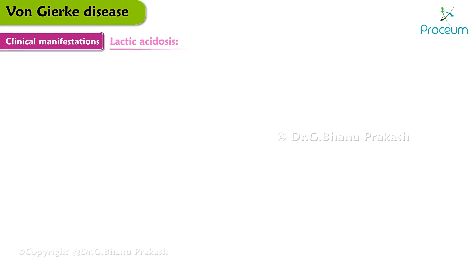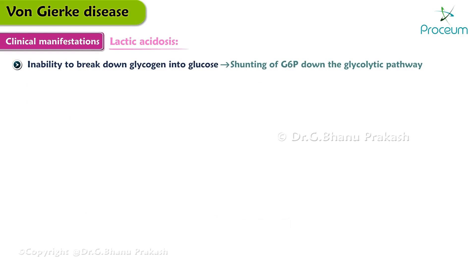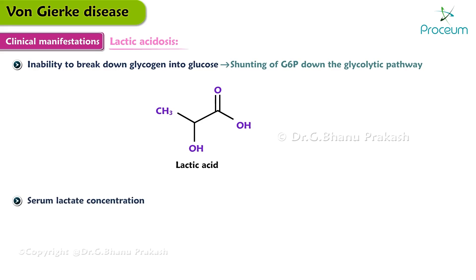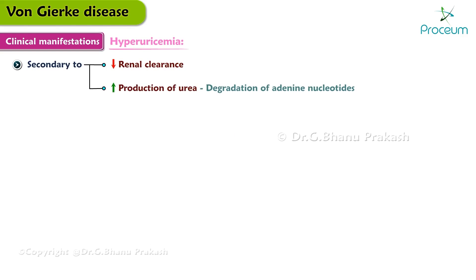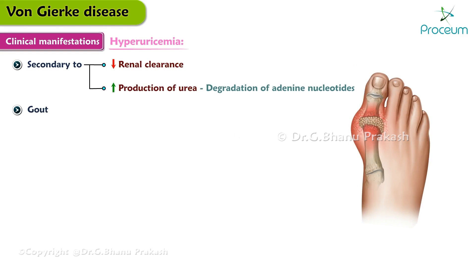Lactic acidosis results from the inability to break down glycogen into glucose, causing shunting of G6P down the glycolytic pathway with resultant lactic acid production. Untreated patients may have serum lactate concentrations between 5 to 10 millimoles per liter. With regards to hyperuricemia, many patients have hyperuricemia secondary to decreased renal clearance and increased production via degradation of adenine nucleotides. Gout rarely develops before puberty.